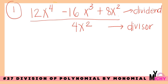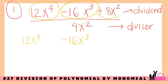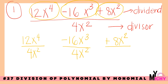So we have 12x raised to the 4th, negative 16x cubed, and positive 8x squared — three terms total. We will split the dividend according to its terms. The next step is to divide all the terms by our divisor, 4x squared.